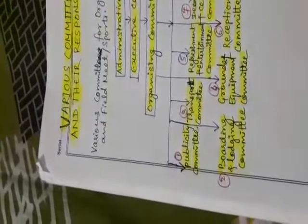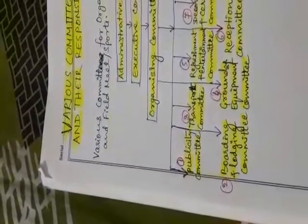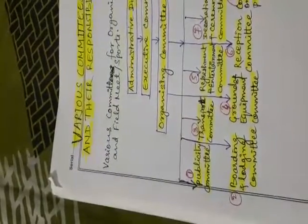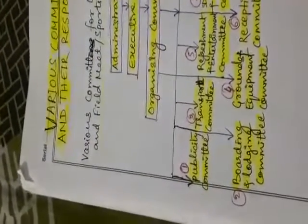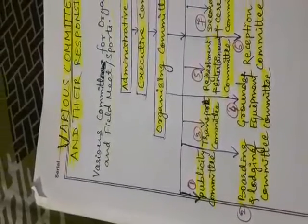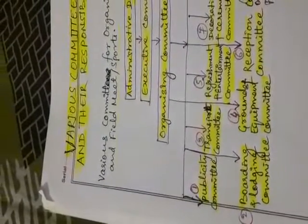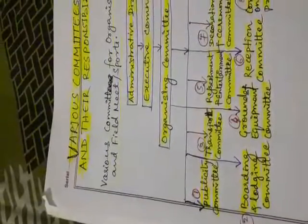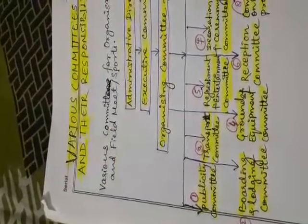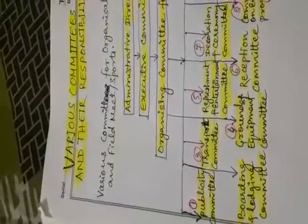The first committee is the publicity committee. The work of the publicity committee is to announce the date, venues and sports events in advance, send information to the institution and handle printing etc. The main responsibility is to advertise the sports events.